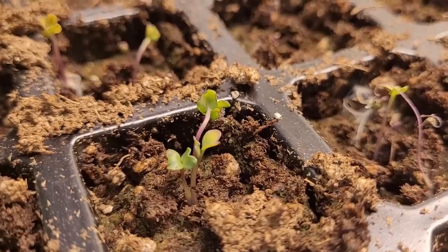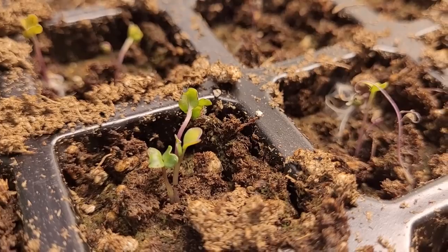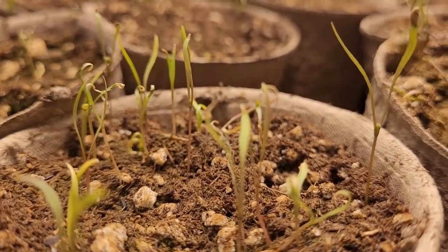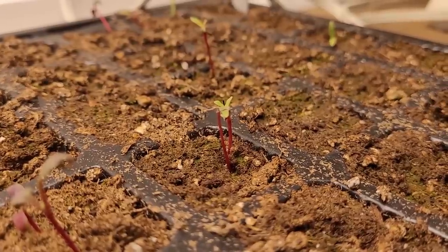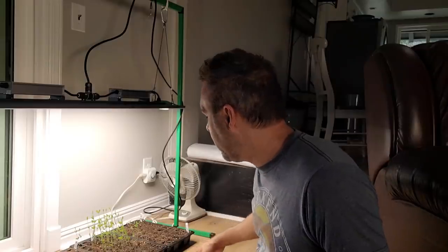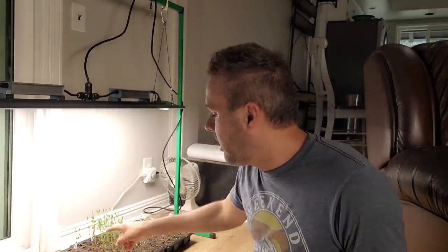But as you can see here, the beets are up, the carrots are up, the purple broccoli is up, and the chard is up, of course the sweet peas. So we're still waiting on the cilantro and the spinach, which in my experience always take longer than everybody else.